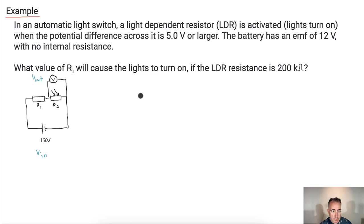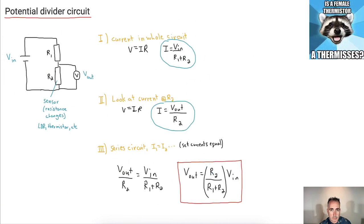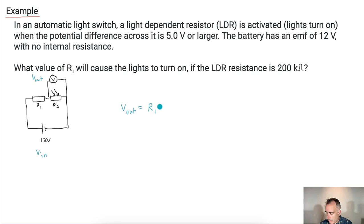We're asking what value of R1 will cause the lights to turn on if the LDR resistance is 200 kilo ohms. Basically we just need to look at this equation that we just came up with before. V_out equals R2 over R1 plus R2. So I'll just write this out. V_out equals R2 over R1 plus R2, all that times V_in. Now all we've got to do is just solve for what we're looking for.